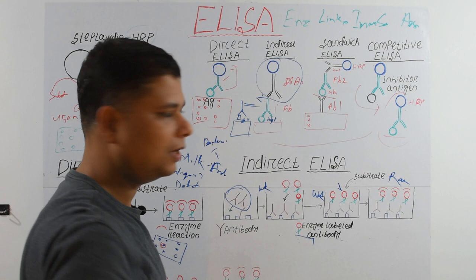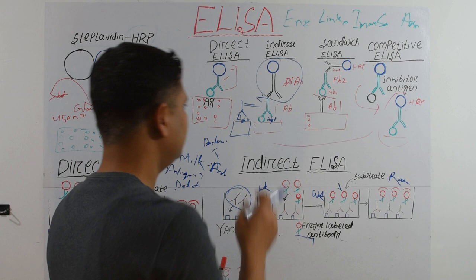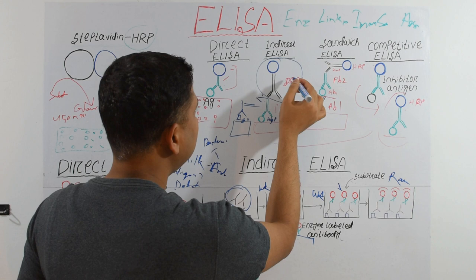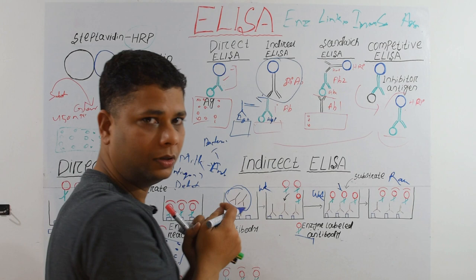The disadvantages of Indirect ELISA: because we use two antibodies, the process takes longer than Direct ELISA. Also, the secondary antibody can sometimes bind to our antigen non-specifically, giving cross-reactivity and false-positive results.